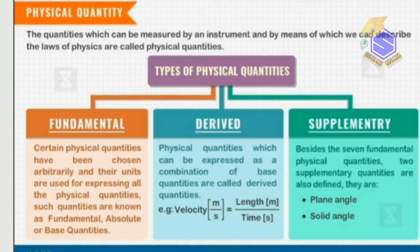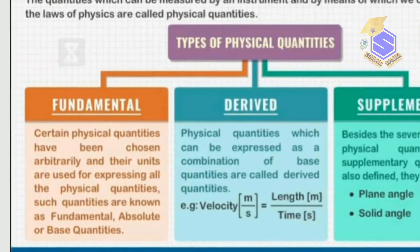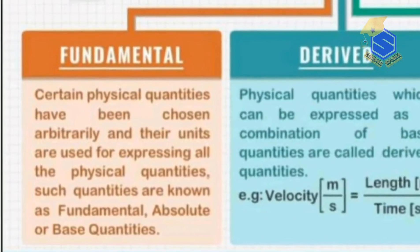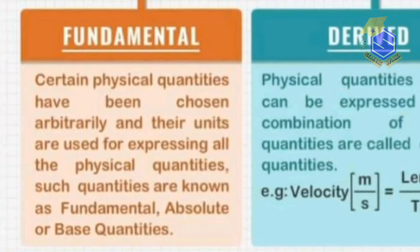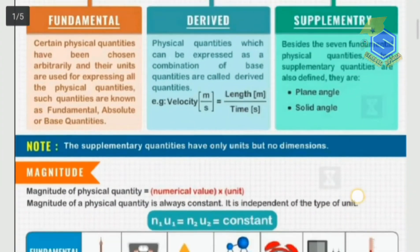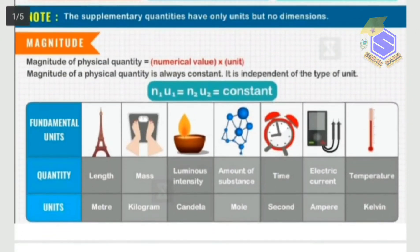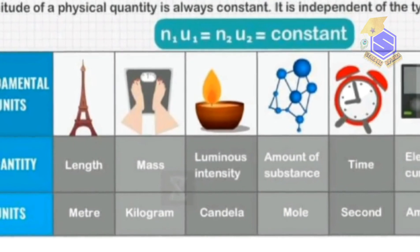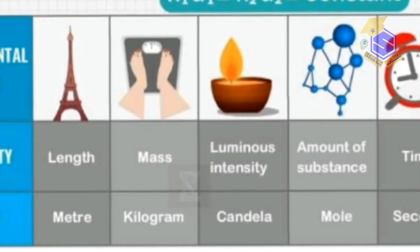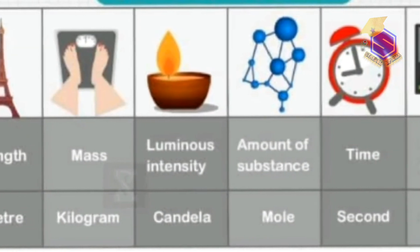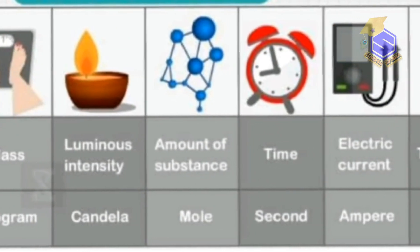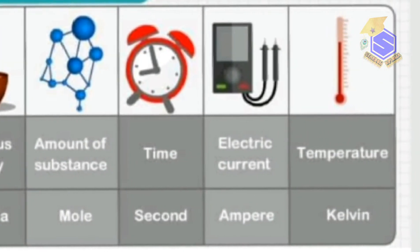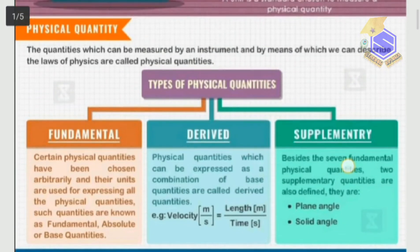Coming to fundamental physical quantities — those are the quantities which are independent of other quantities. These quantities are also known as absolute or base quantities. The seven main fundamental physical quantities and their units are: length measured in meters, mass in kilogram, luminous intensity in candela, amount of substance in mole, time in seconds, electric current in ampere, and temperature in Kelvin.